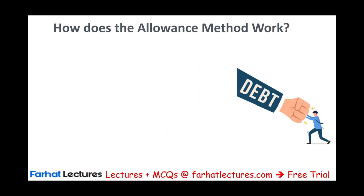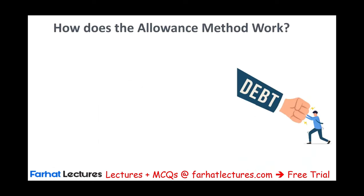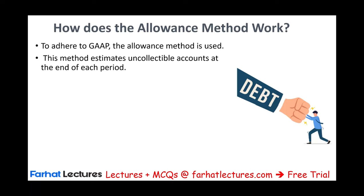Let's assume the company has a million dollars of receivable of which $50,000 is not collectible. The company would show NRV — net realizable value — of $950,000. It shows you that you do have a million dollars of receivable; however, of that million dollars, only $950,000 is collectible. Those are the advantages that make the allowance method a GAAP method — the acceptable method. This method estimates uncollectibles at the end of each period.